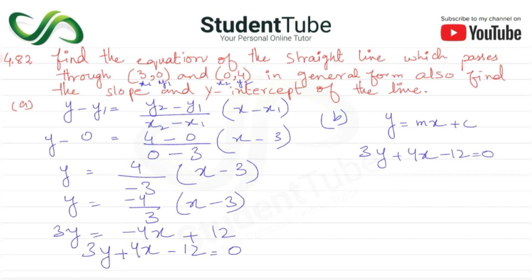So 3y on the left side, and the others go to the right: 3y is equal to minus 4x plus 12. Dividing by 3, we get y is equal to minus 4 upon 3 times x plus 12 upon 3. This simplifies to y is equal to minus 4 upon 3 times x plus 4.